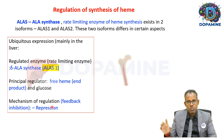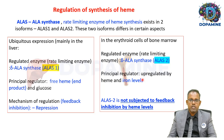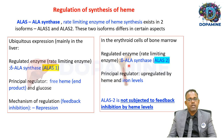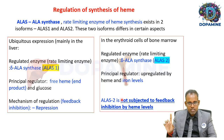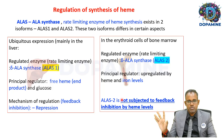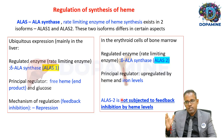ALA synthase 2 is found in the bone marrow. It is the rate-limiting enzyme for heme synthesis in the bone marrow. Heme is known to upregulate ALA synthase 2, as do iron levels. Unlike ALA synthase 1, ALA synthase 2 is not subject to feedback inhibition by heme. The key differences between the two isoforms are their location and their regulation.